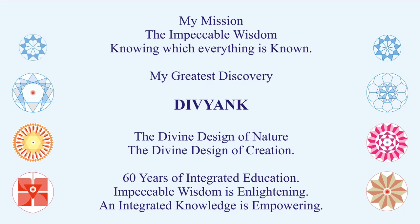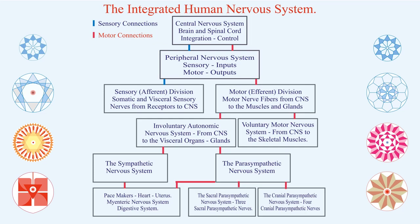Impeccable wisdom is enlightening and integrated knowledge is empowering. Let's understand the integrated human nervous system. The nervous system consists of three components: one, sensory inputs — the afferent division — which brings external information from the external world from receptor to the central nervous system. The central nervous system — the brain and spinal cord — evaluates all the information coming from the sensory system. Integration and master control is done by the central nervous system, and what is to be executed is done through the peripheral nervous system motor component.